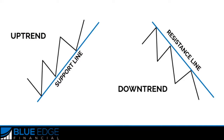We learned about trend lines, and in their most basic form, an uptrend line is drawn along the bottom of easily identifiable support areas, or valleys. In a downtrend, the trend line is drawn along the top of easily identifiable resistance areas, or peaks.